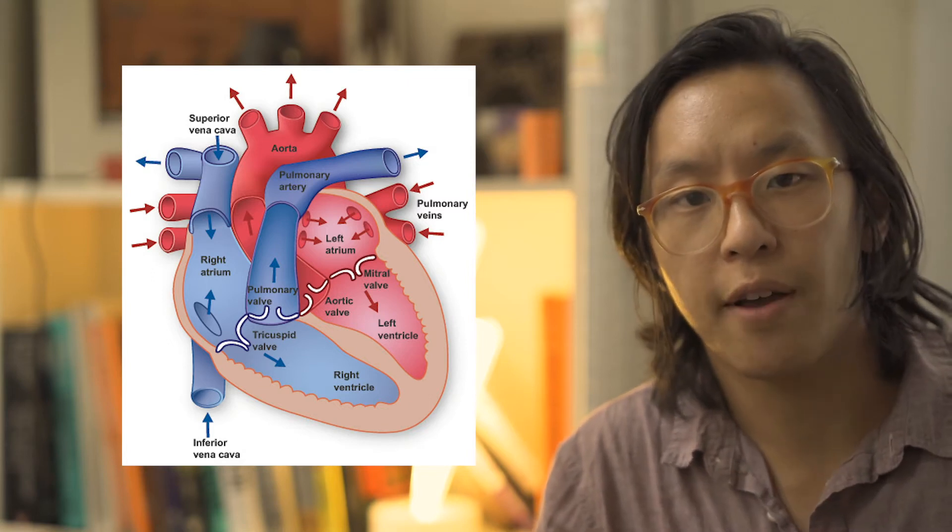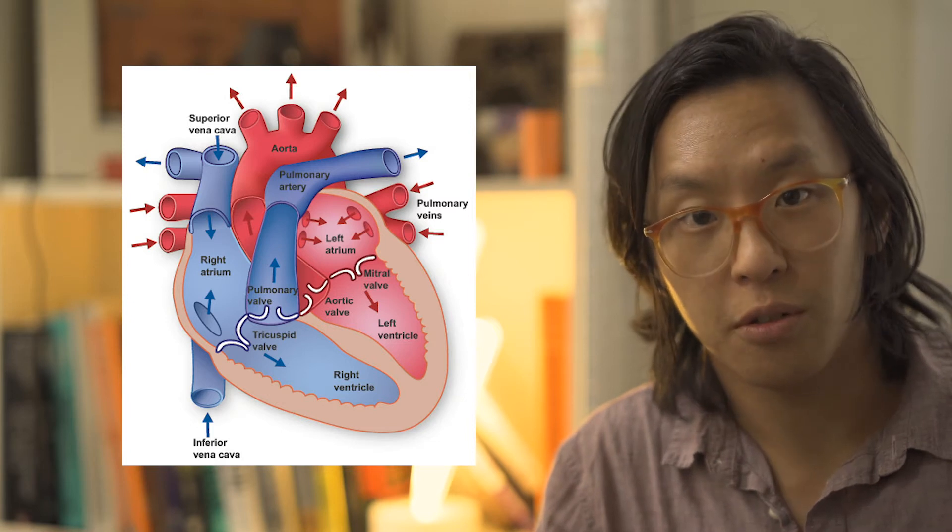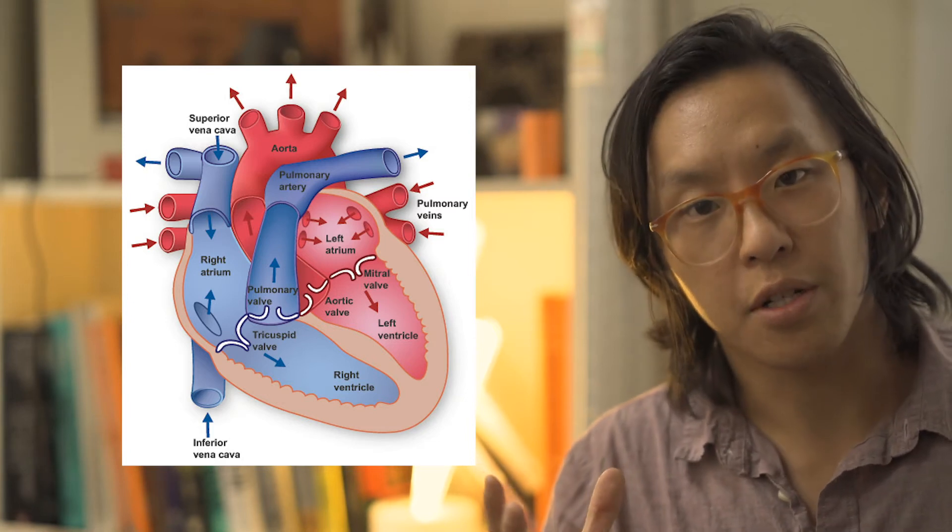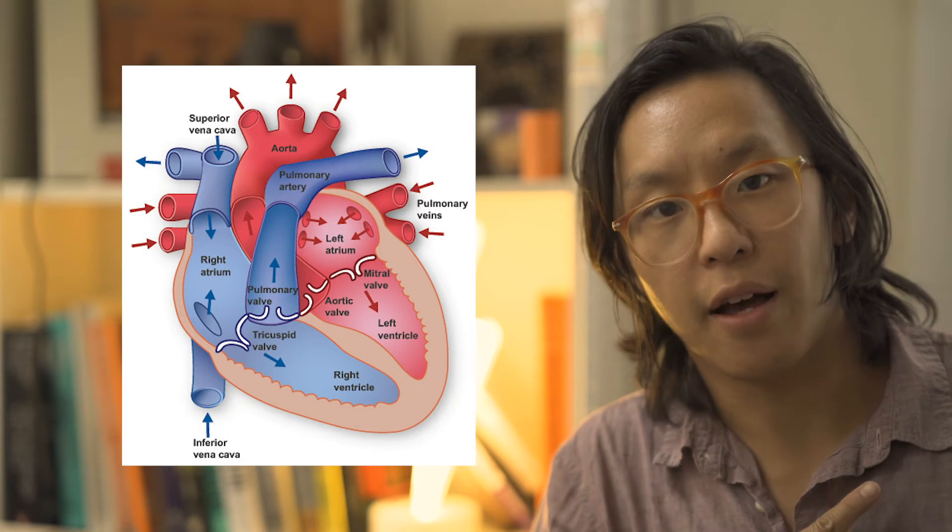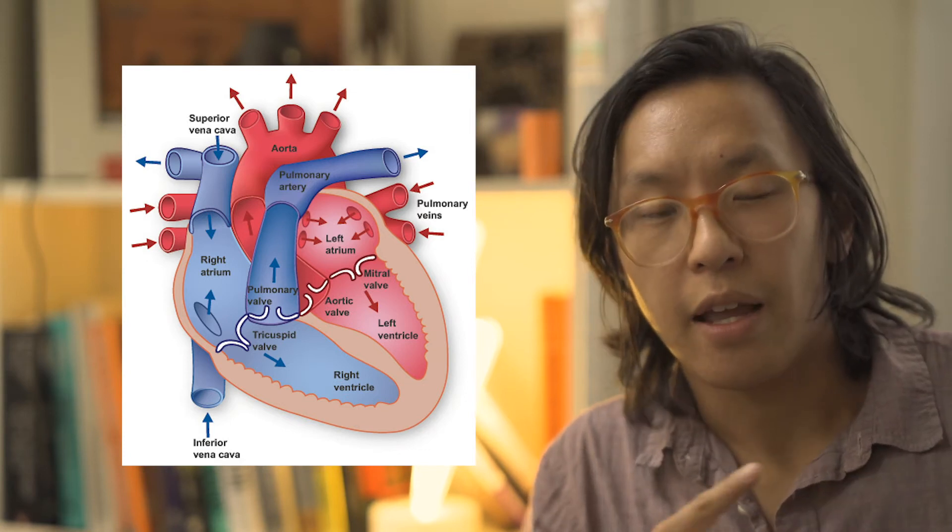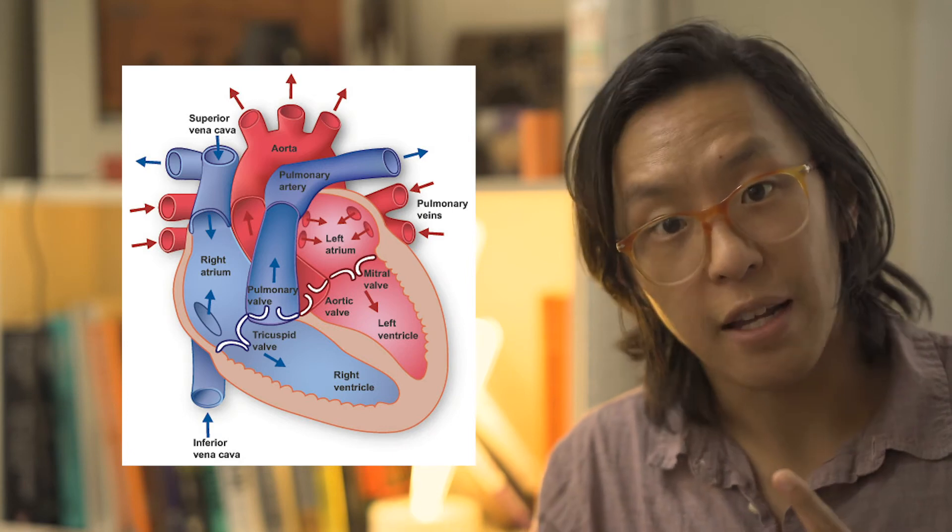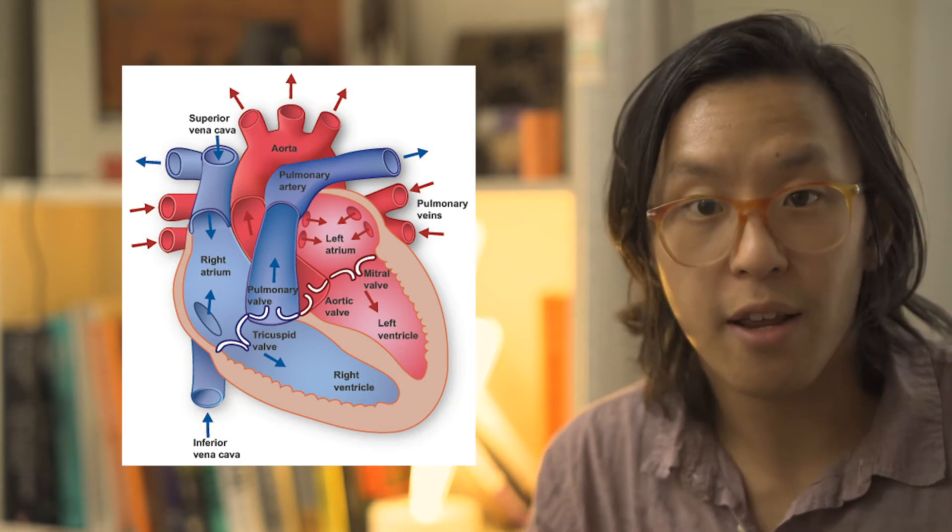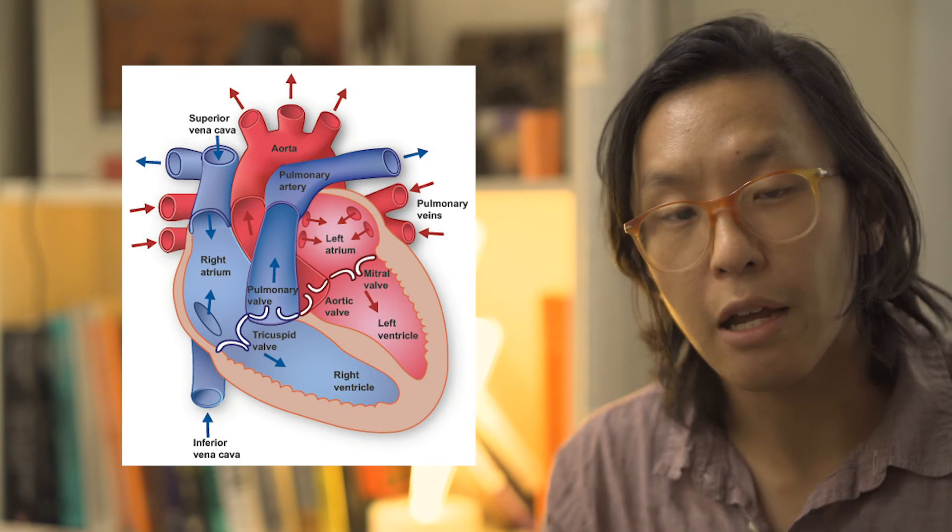The right ventricle is going to push that blood through the pulmonic valve into the pulmonary artery. For arteries and veins, I want you to think away for artery, A for away, A for artery.